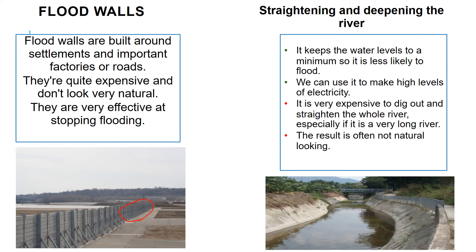You can also straighten the river, which allows you to drain the water the river is carrying much more quickly. A straight river will carry water out to the sea faster and help drain the land more quickly. However, it's a huge engineering project, expensive, tends not to look natural, and also destroys natural habitats.